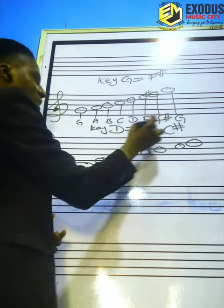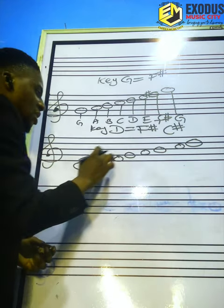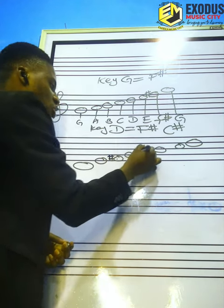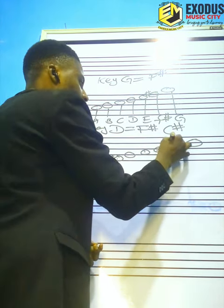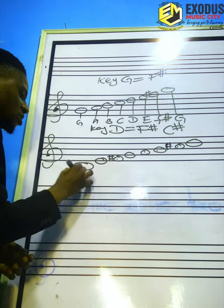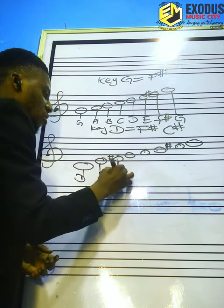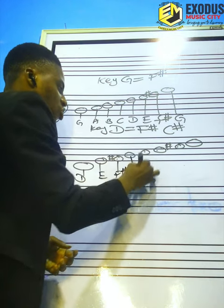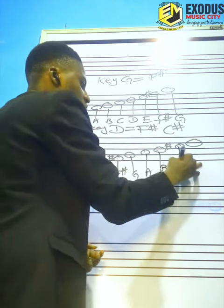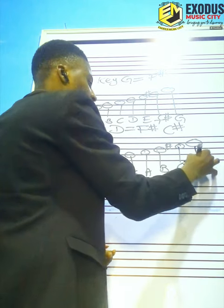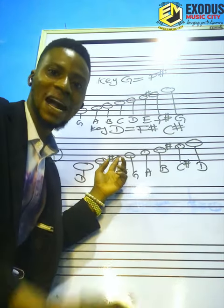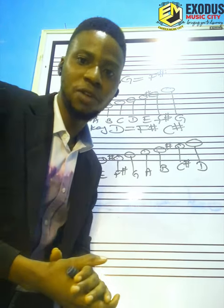Now let's add the accidentals. D, E, F — then F sharp — G, A, B, C. Let's write it out: D, E, F sharp, G, A, B, C sharp, and D. Remember, the accidental should be behind the note. I hope you've gained something.